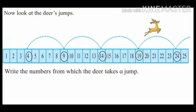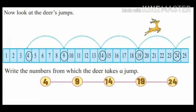Write the numbers from which the deer takes a jump. From number 4, he jumped to number 9, then he reaches number 14, then he jumps and reaches number 19, and at the end 24.